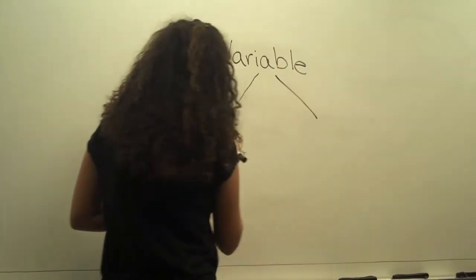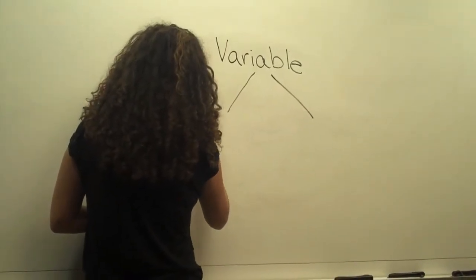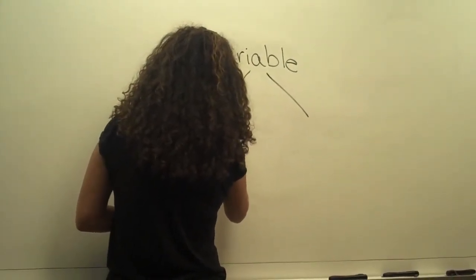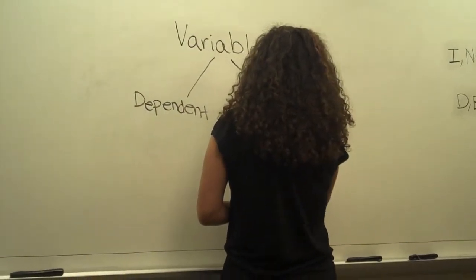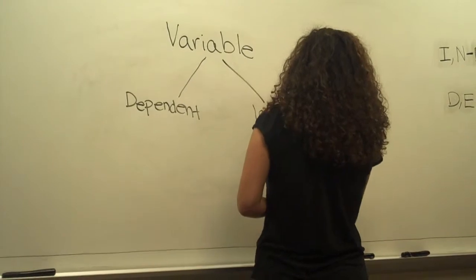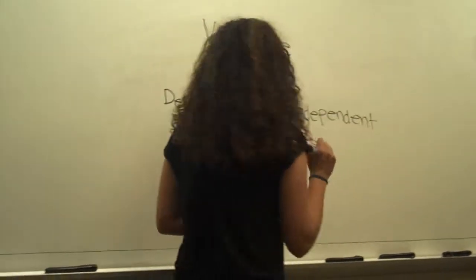And then we have two different kinds of variables. We have dependent variables, and we have independent variables. So, what are those?